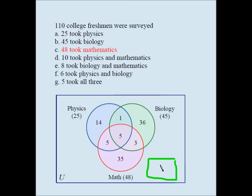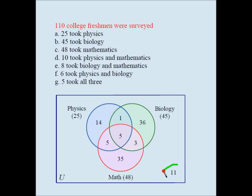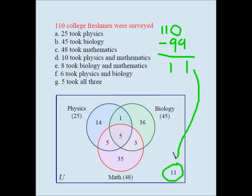What goes outside the three circles? These are the people who did not take any of the three subjects. One hundred and ten people were surveyed. If I add all seven numbers inside the circles I get ninety-nine. Ninety-nine people took at least one of the three subjects. So one hundred and ten minus ninety-nine equals eleven — eleven people took none of the three subjects. Now I have the entire Venn diagram and I'm ready to answer the questions.